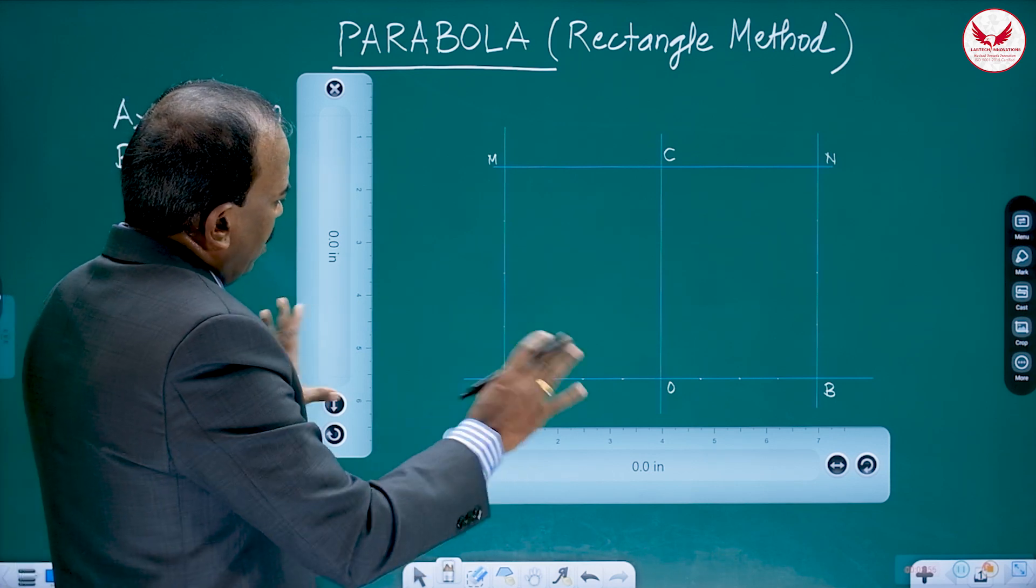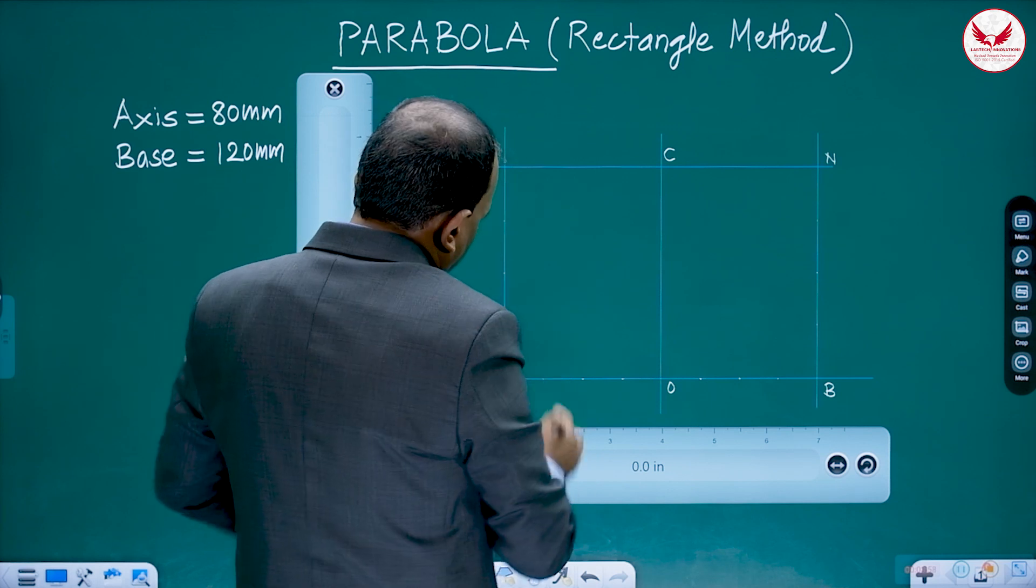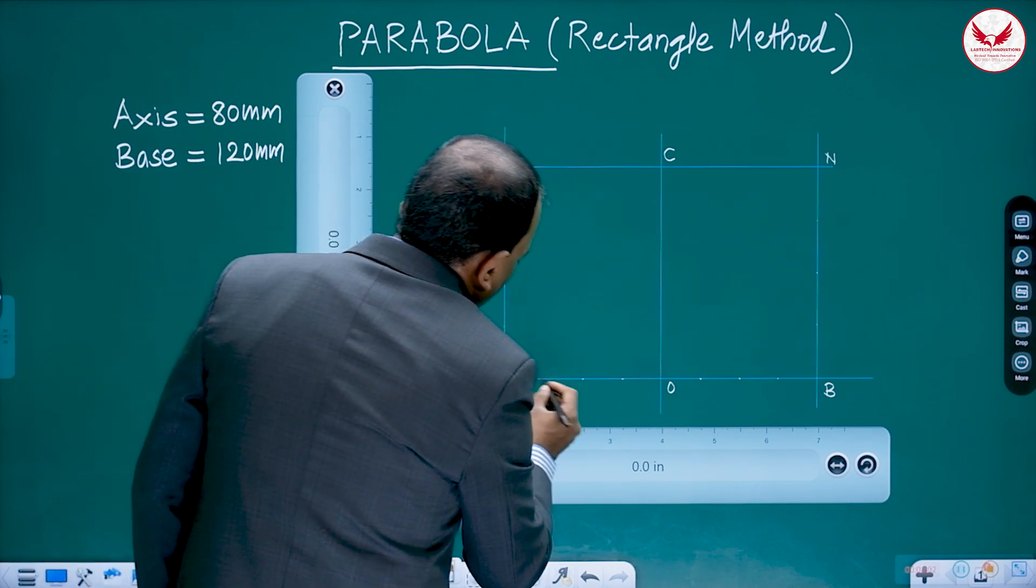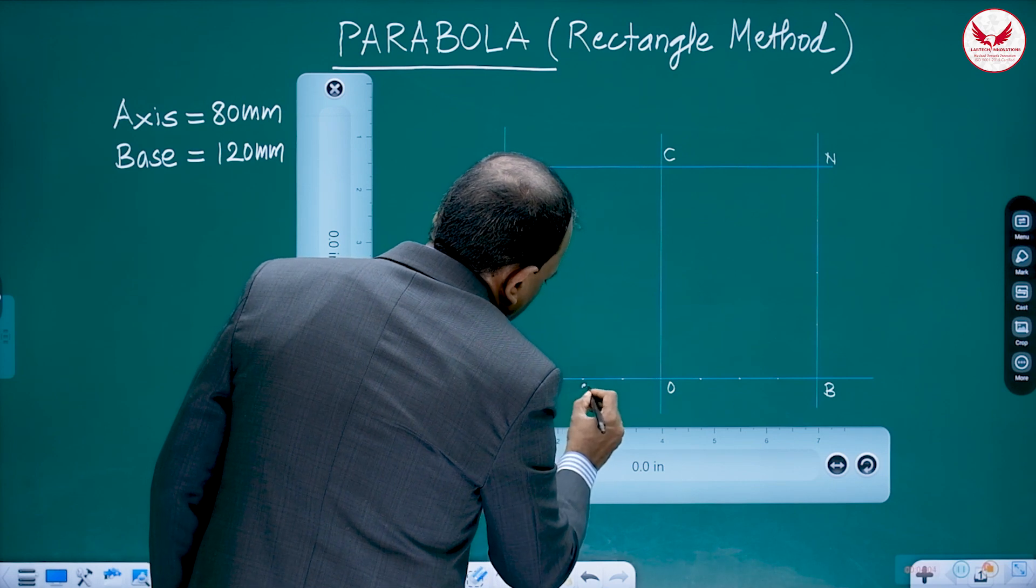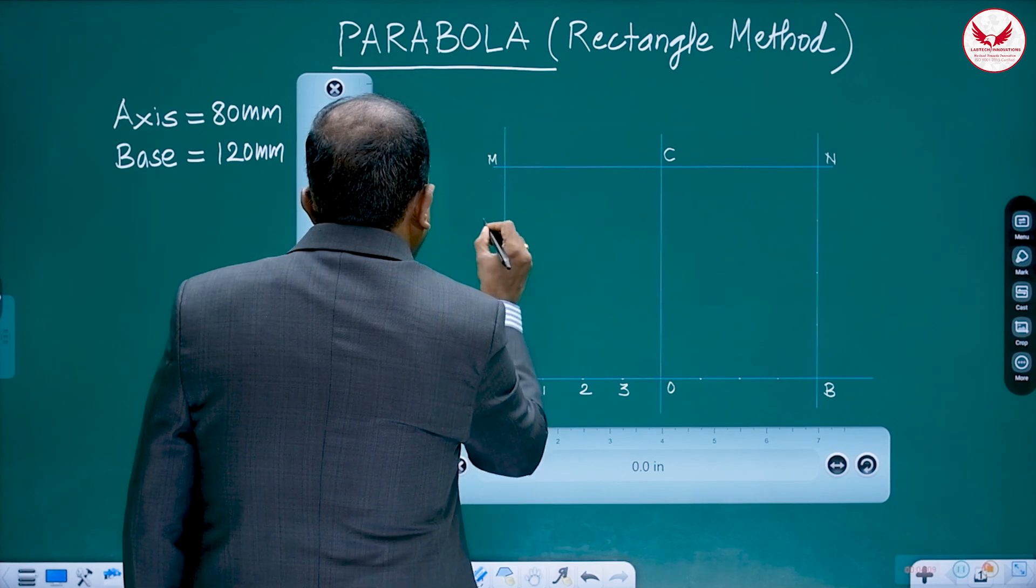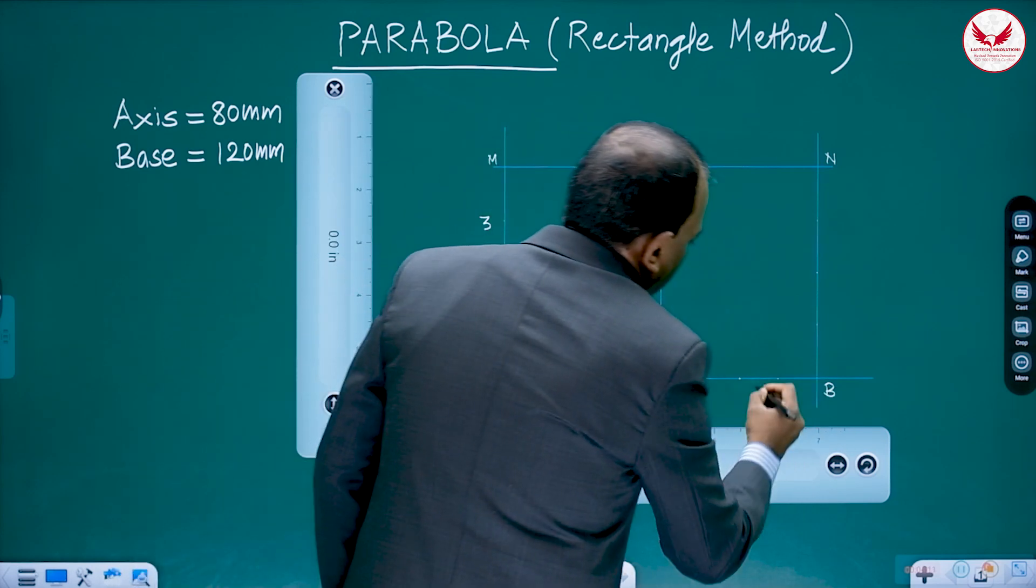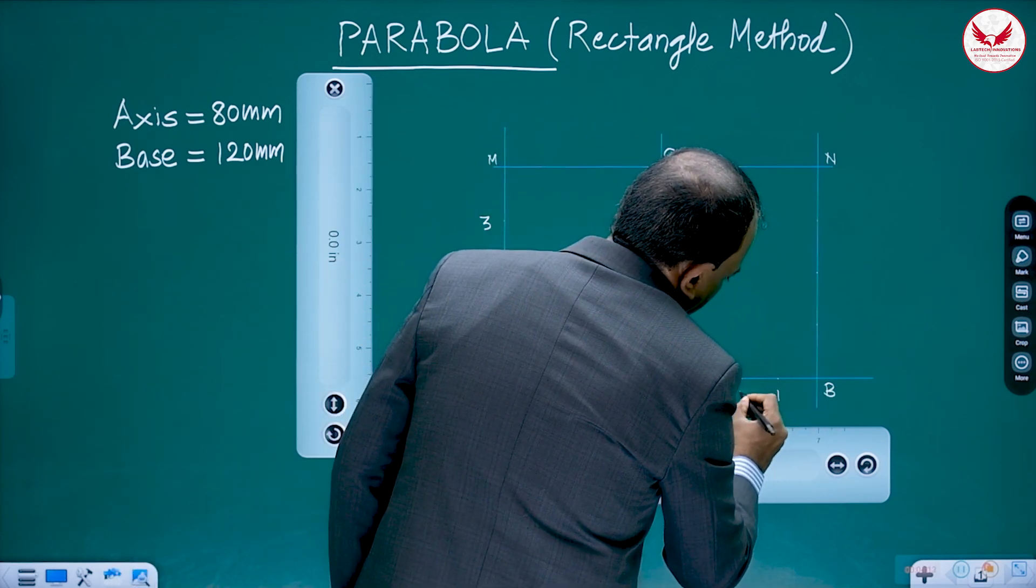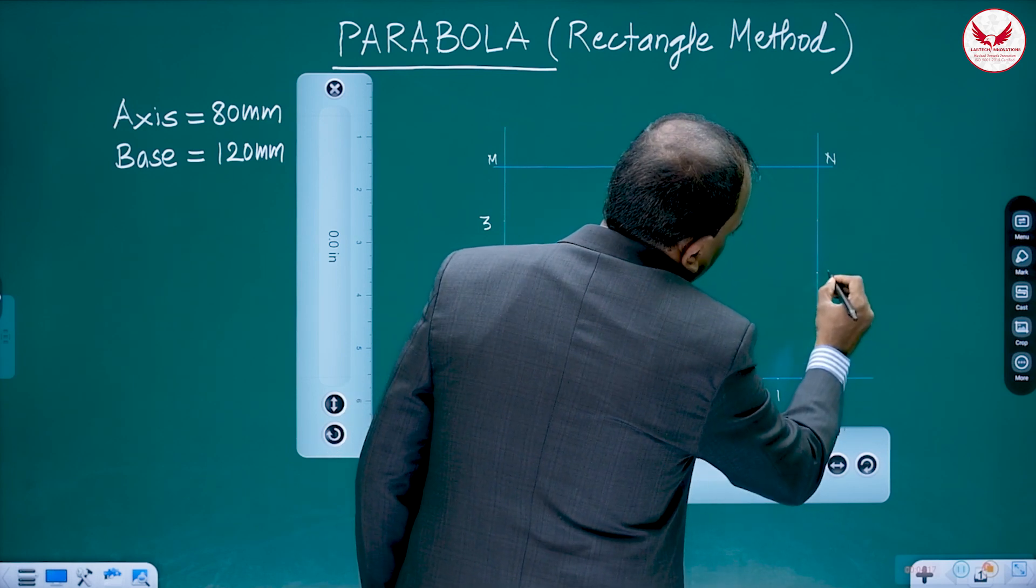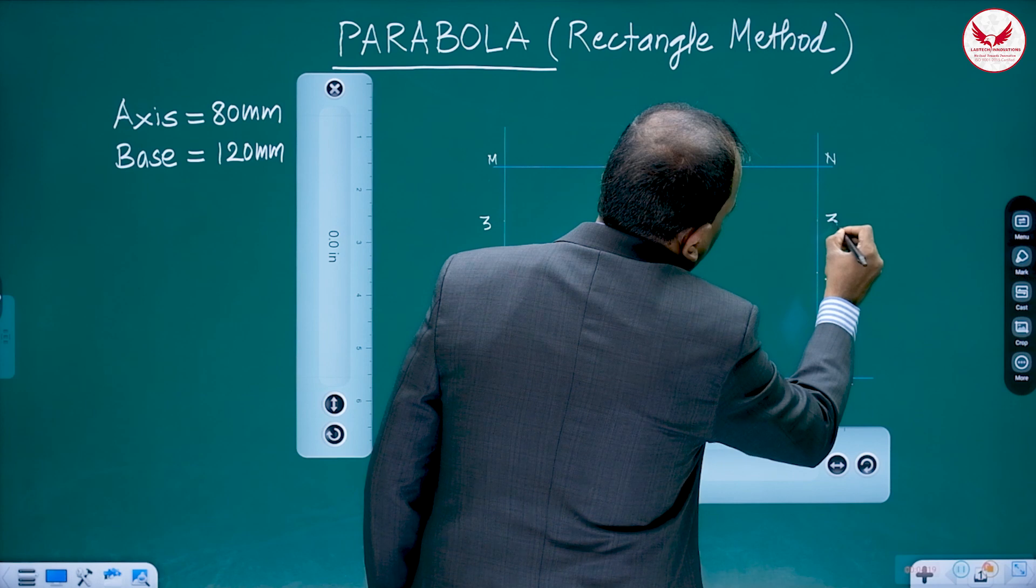Then, after making these four equal divisions, what I will suggest? You give the names. It's 1, 2, 3. Similarly, it is 1, 2, 3. From B also, it's 1. This naming is very important. 2, 3. It's 1, 2, 3.